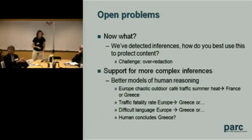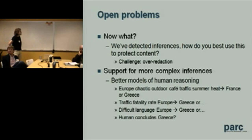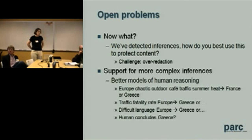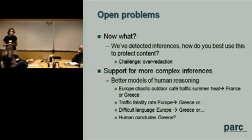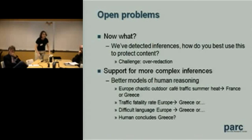So what now? How do you protect content once you've detected it? The Valerie Plame example was a little bit of a cheat — those keywords have a high confidence association with Greece, but they also have a high confidence association with France. We're not currently modeling how a human would deal with these ambiguities. A human might say it looks like France or Greece, but later she complains about how difficult the language is, which suggests Greece, and a human might conclude the most likely answer is Greece. That's something we're not doing yet.